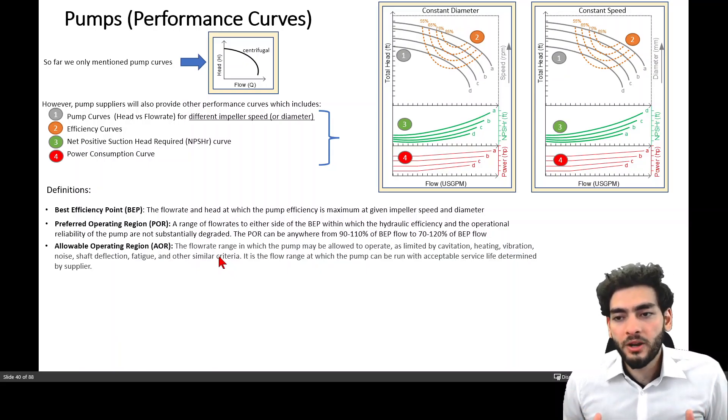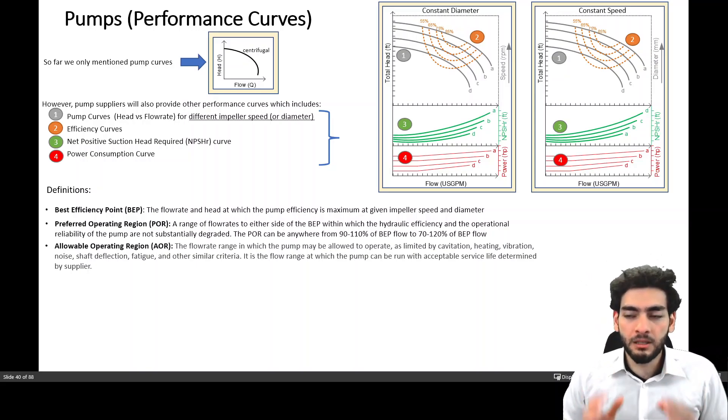The allowable operating region is the flow rate range in which the pump may be allowed to operate as limited by cavitation, heating, vibration, or noise, and other similar criteria. It's a flow range at which the pump can be run within acceptable service life determined by the supplier.